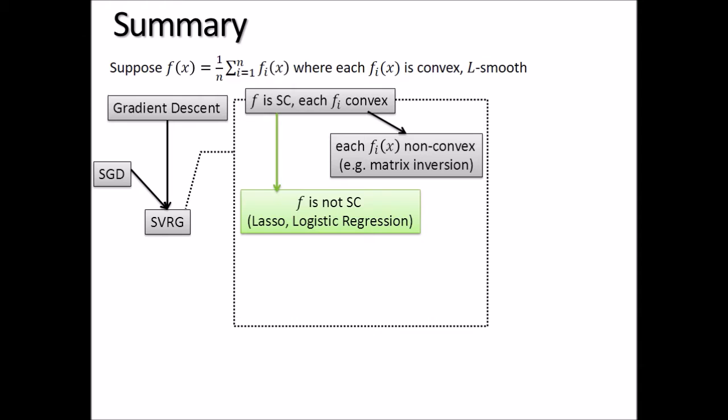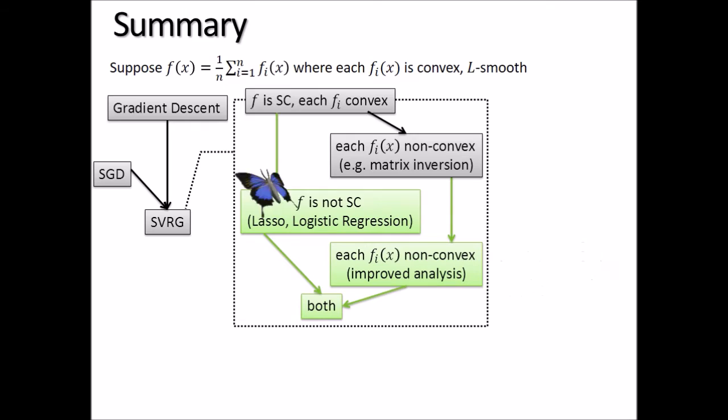The second result focuses on what if each fi is not convex, although the average function is still convex. This class of problems has many important applications. This framework was first proposed by Shalev-Shwartz, who presented his paper in the first session of this workshop. We provide an improved analysis upon his results. We also have a third theorem combining both, which we skip today.